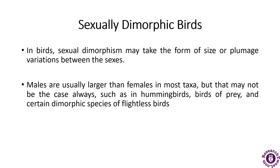Sexual dimorphisms are often influenced by migration trends and altitude. This factor can also be traced back to species size dimorphism, and it has been proven that larger males are better at dealing with the challenges of migration and, as a result, are much more effective at reproducing once they arrive at their breeding destination.